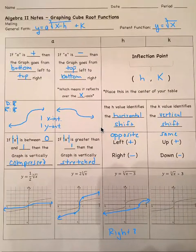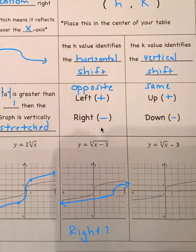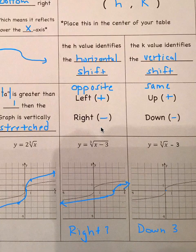For the cube root of x minus 3, the minus 3 outside means shifting down three. The inflection point moves down three, and the graph looks exactly the same as the parent function, just translated.